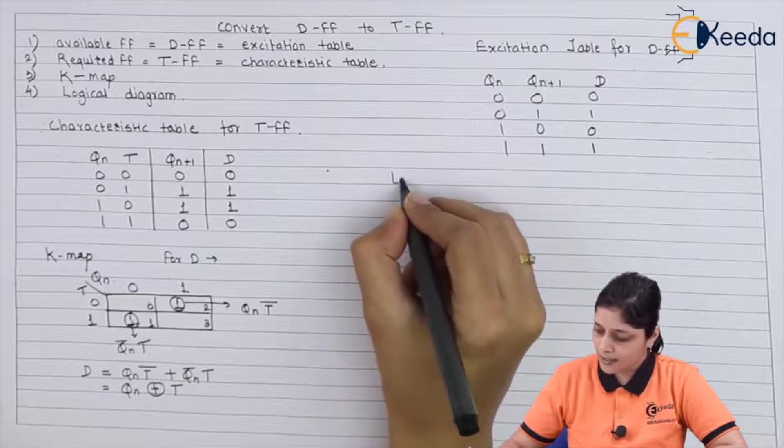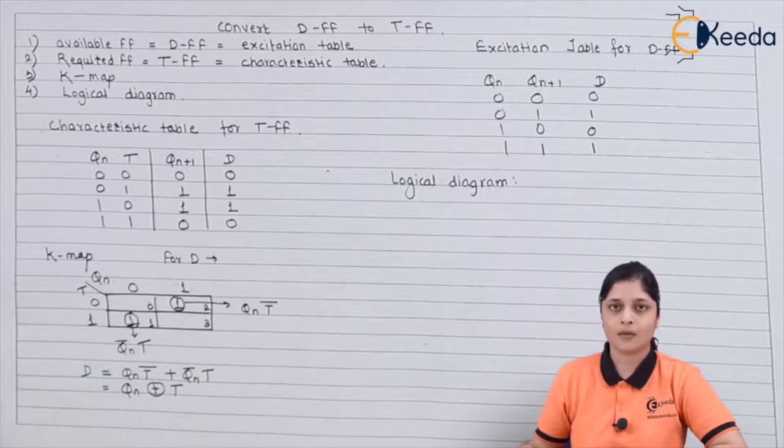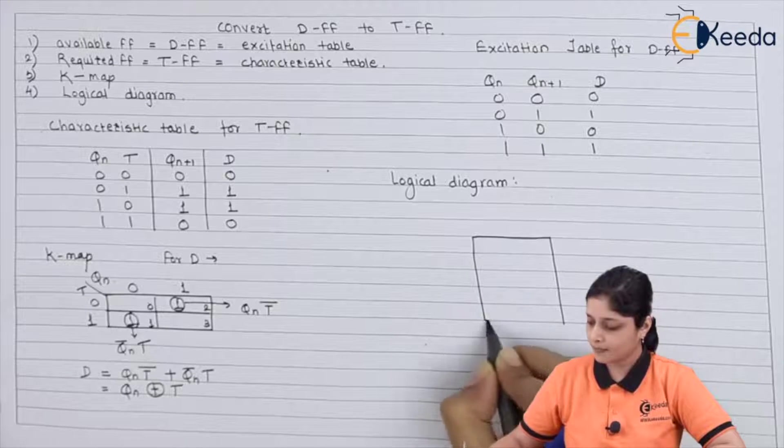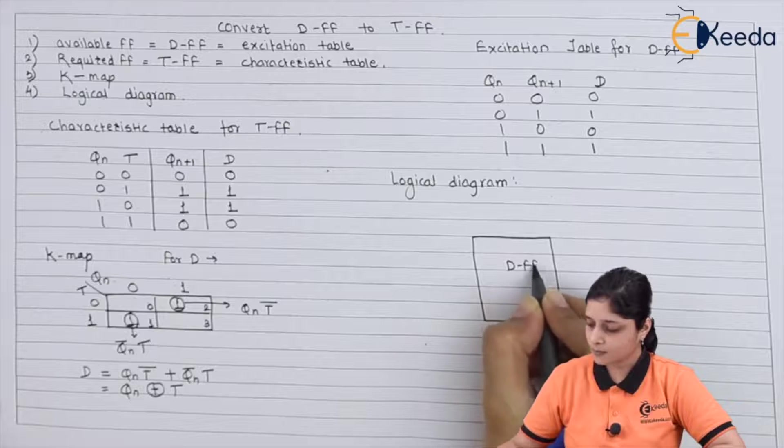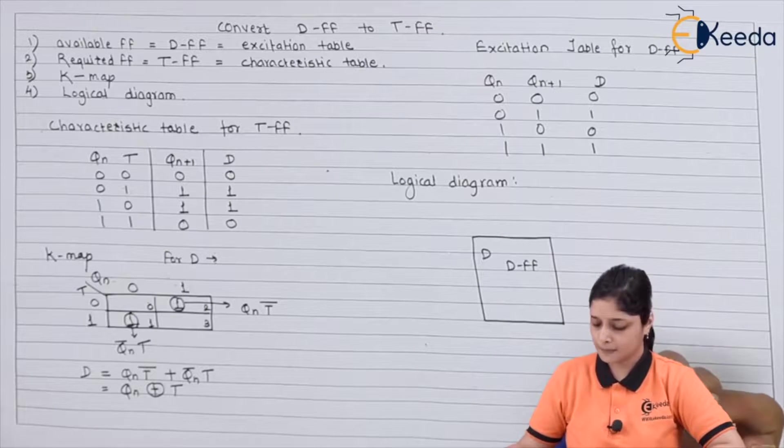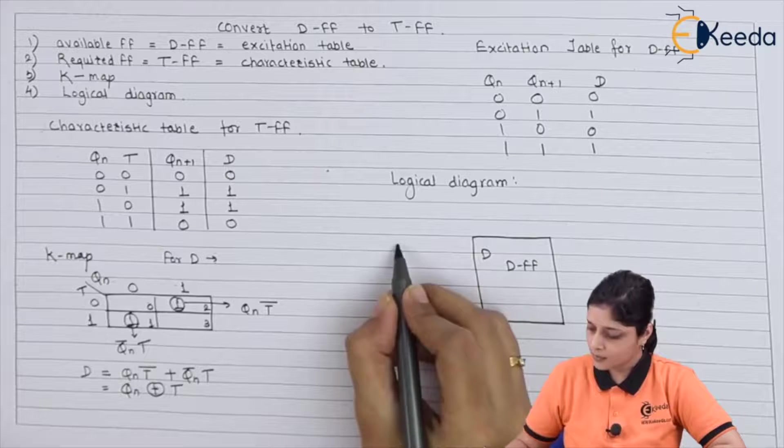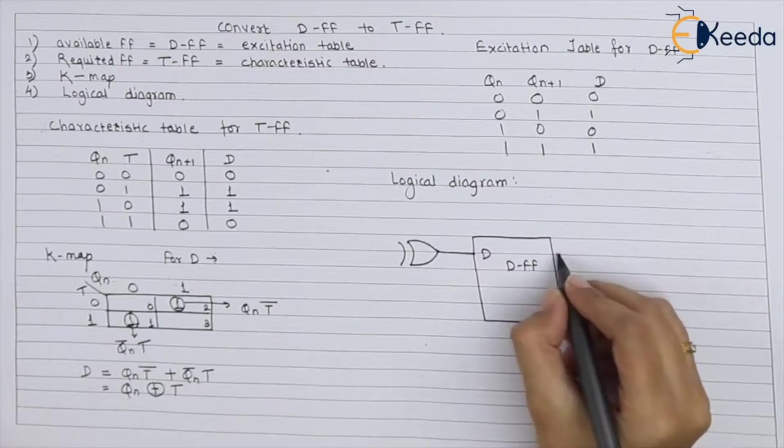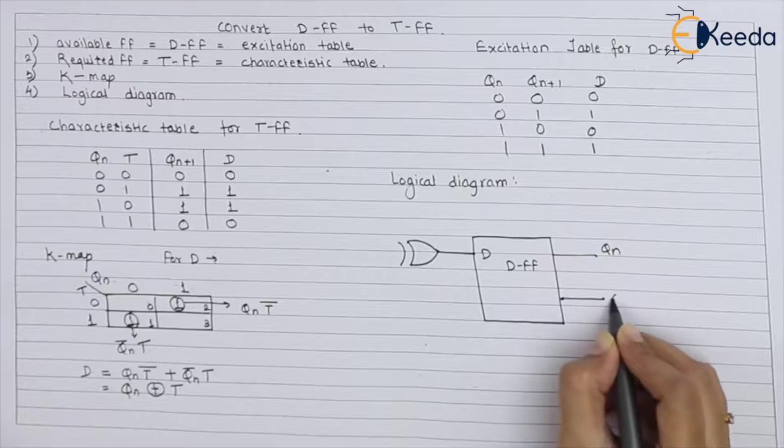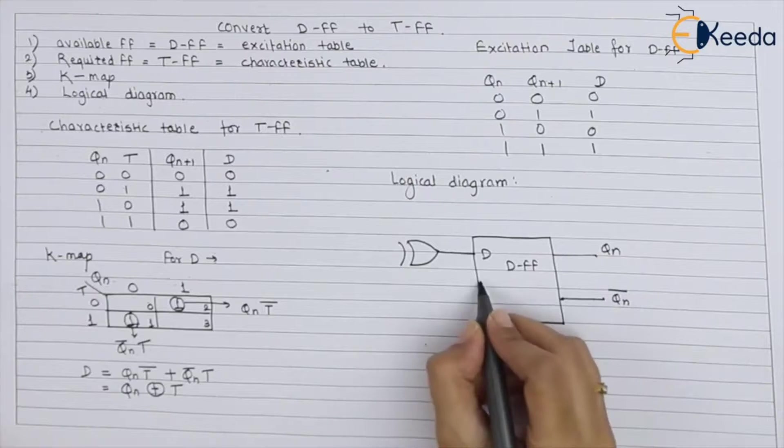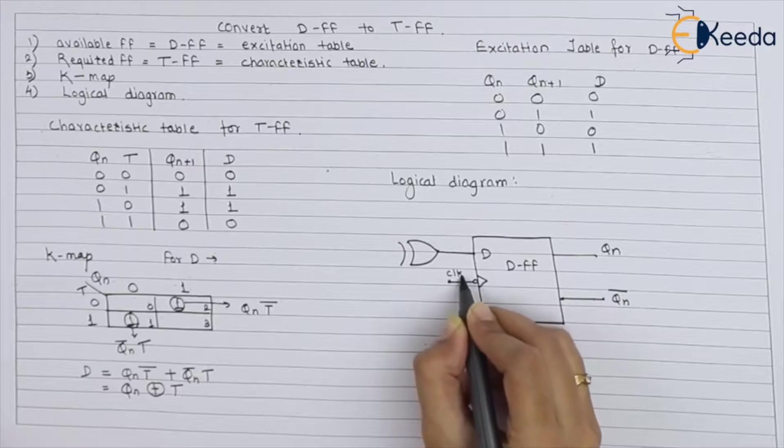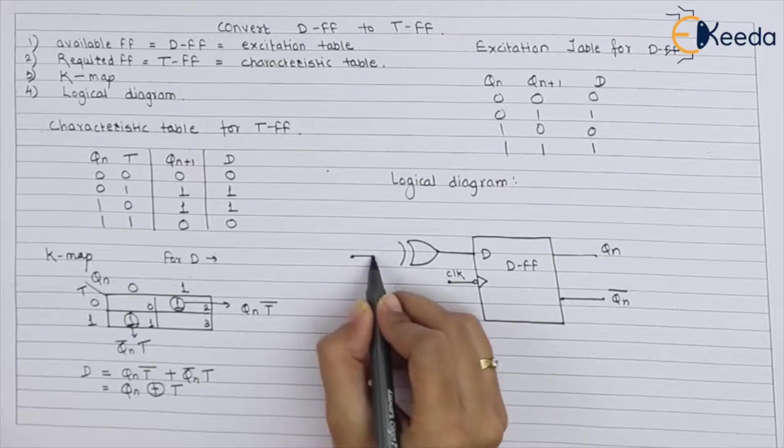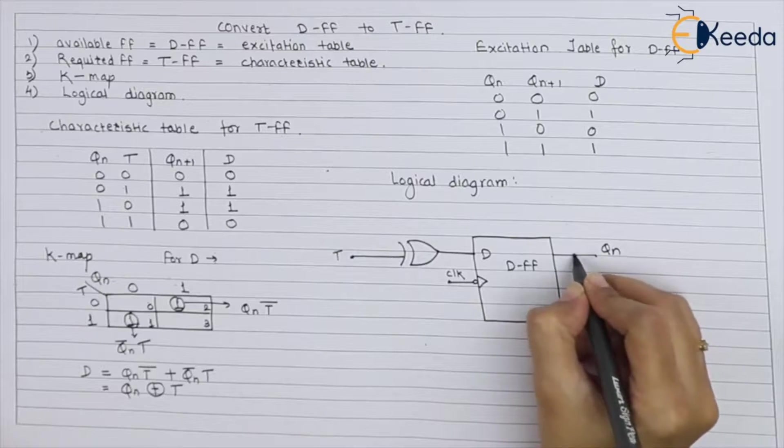Now the process of logical diagram starts. The logical diagram consists of the available flip-flop, which is D flip-flop. The equation is Qn XOR T, so we have an XOR gate. You have to give input to D. After that, you have to show Qn, Qn bar, and then the clock signal. The inputs are T and Qn.